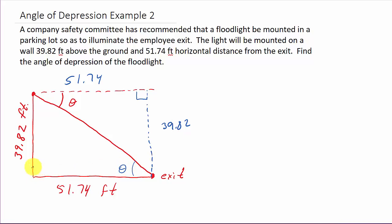Alright. So, here, this is a right angle here. I've got, I know opposite. I know adjacent. What do we know about opposite and adjacent? That's tangent. So, I know that tangent theta is equal to opposite, which is 39.82 over adjacent, which is 51.74.